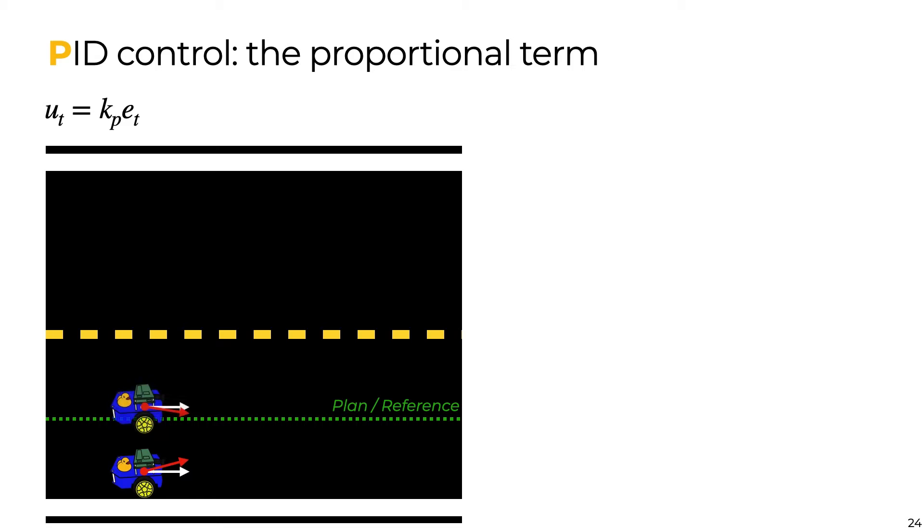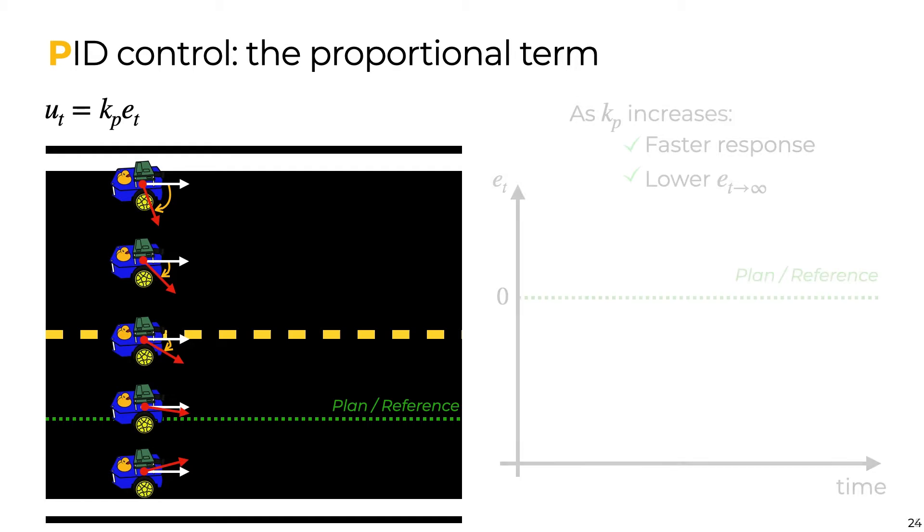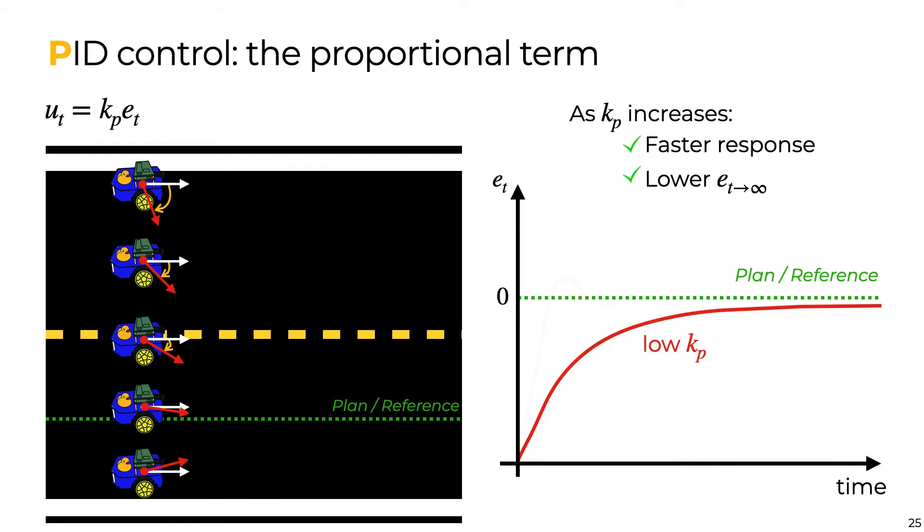The P part of a PID controller is a signal that is proportional to the magnitude of the error, that tries to move the system in the direction that is opposite to the error. The further away we are from the center of the lane, the harder we steer towards it. As the P coefficient increases, the robot will reach the goal sooner, the response speed of the closed loop will increase, and the tracking accuracy at steady state increases too.